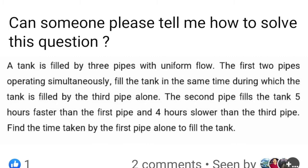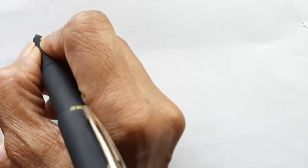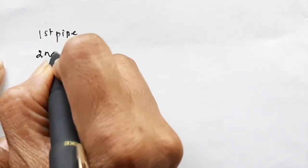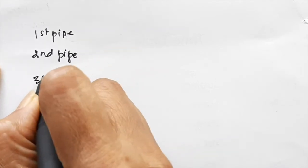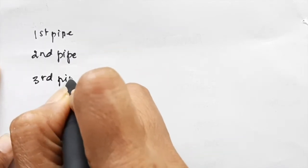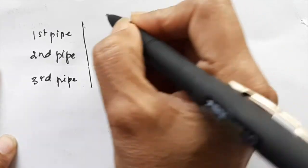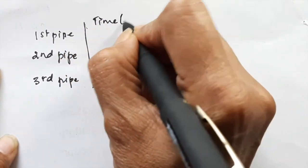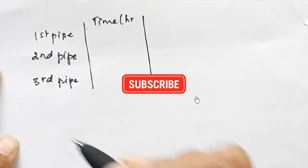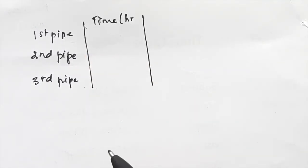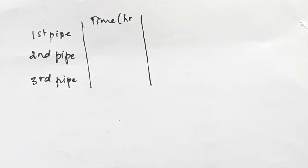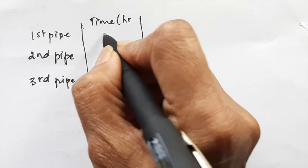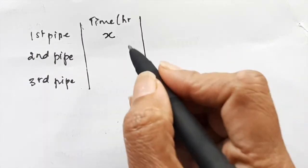Now in this case we have three pipes so we will write first pipe, second pipe, and third pipe and make columns. The first column will be the time in hours taken by each pipe. They are asking us to find the time taken by the first pipe alone to fill the tank, which means I should take the first pipe taking x hours to fill the tank.